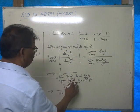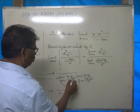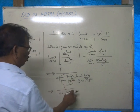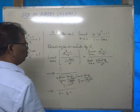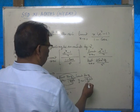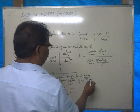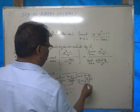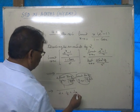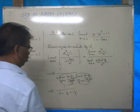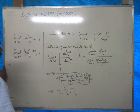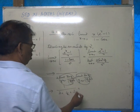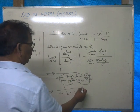Sin(x/2) by (x/2) equals 1 by 2. This portion is 1, and here there is a 2. As x by 2 tends to 0, sin(x/2) by (x/2) is also 1. So we have 1 by 2, and 2 and 2 got cancelled. Therefore 1 by 1 by 2 means the answer is 2.